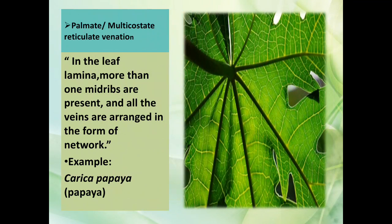Palmate multicostate reticulate venation: in this type, the leaf lamina has more than one midrib present, and all the veins are arranged in the form of a network. For example, in the papaya plant.